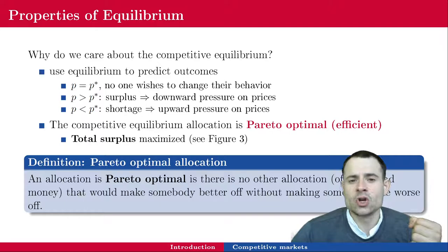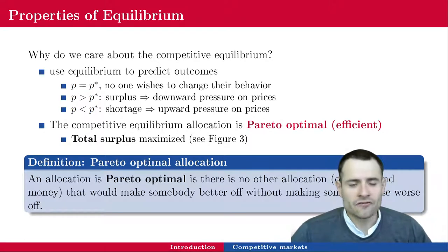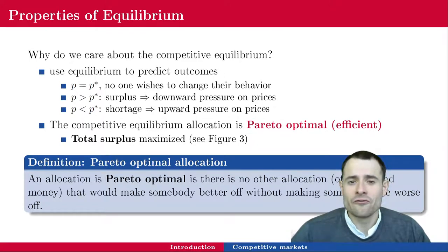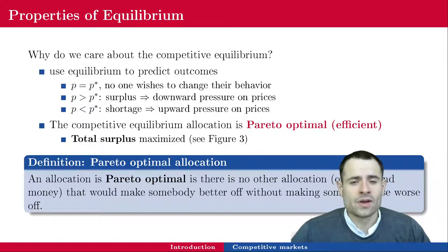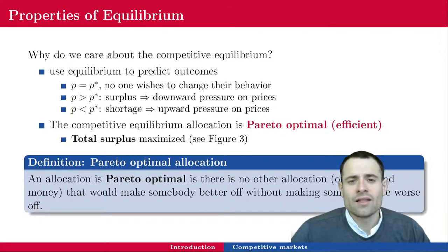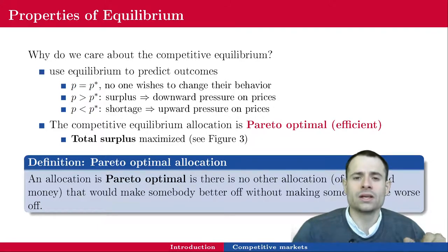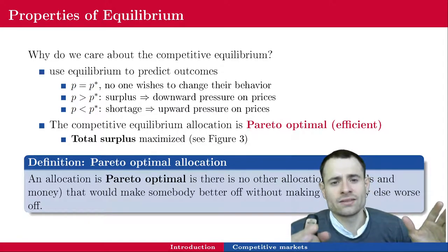Note that Pareto efficiency has a lot to do with the notion of waste — leaving $5 on the floor sounds like a waste. However, allocations could be efficient but they don't have to be fair. A world with a dictator who owns everything and everybody else owns nothing is technically Pareto efficient, because to make anybody better off you need to take resources from the dictator, making the dictator worse off. That is enough to say the allocation is Pareto efficient.